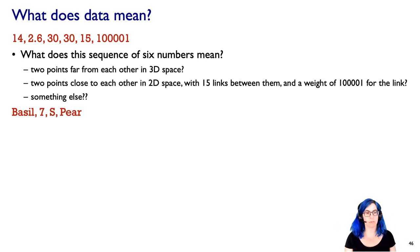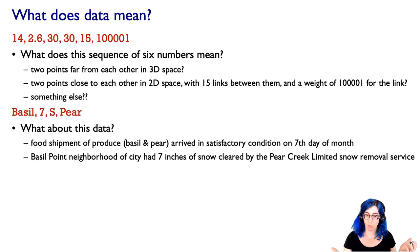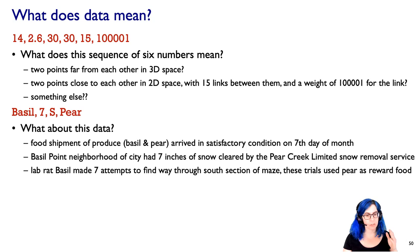Here's another example. It's not just mysteries about numbers. Basil, 7S, pear. What does that mean? I could imagine things. Maybe it's a food shipment of produce, basil and pears. They arrived in satisfactory condition on the seventh day of the month. Maybe it's the Basil Point neighborhood of the city. There were seven inches of snow. They were cleared by Pear Creek Limited snow removal service. Maybe I had a lab rat codenamed basil. It took seven attempts for him to find his way through the south section of the maze, and the reward food we used in those trials was a pear.